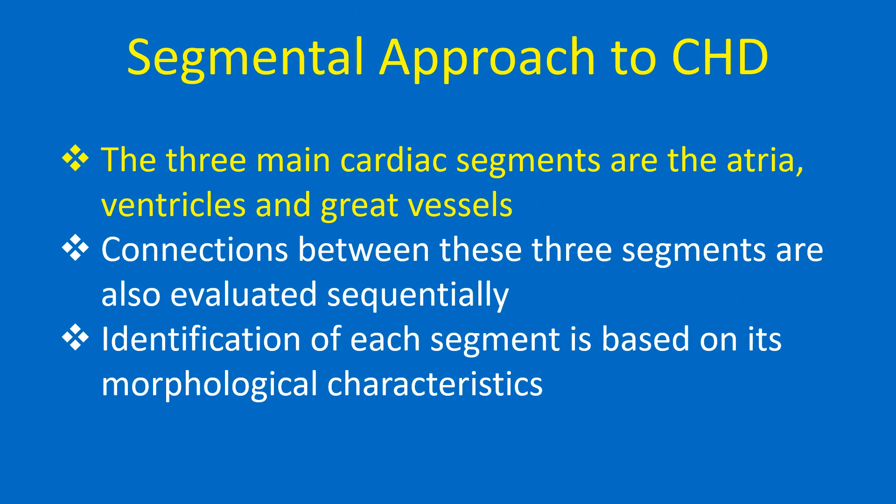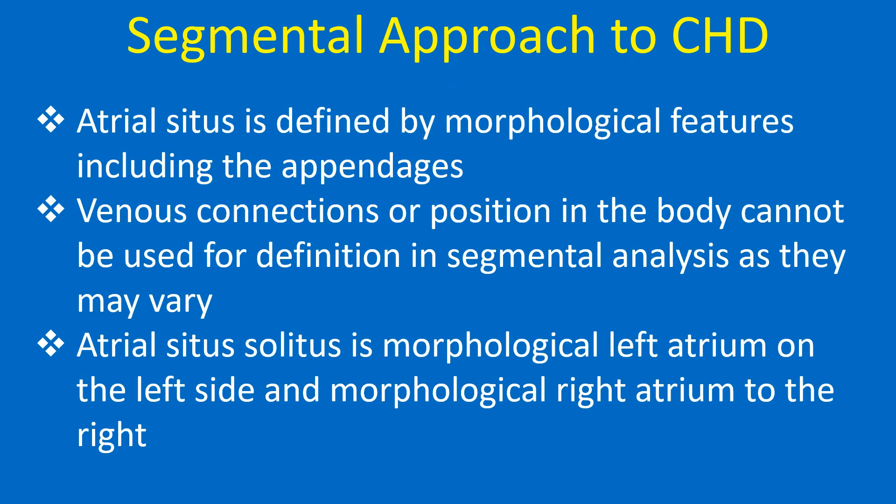The three main cardiac segments are the atria, ventricles and great vessels. Connections between these three segments are also evaluated sequentially. Identification of each segment is based on its morphological characteristics. Atrial situs is defined by morphological features including the appendages. Venous connections or position in the body cannot be used for definition in segmental analysis as they may vary.